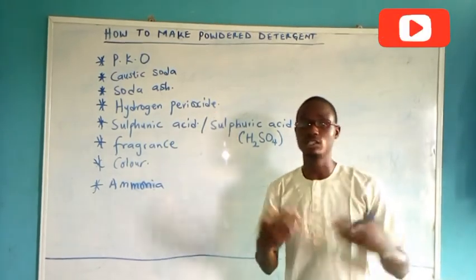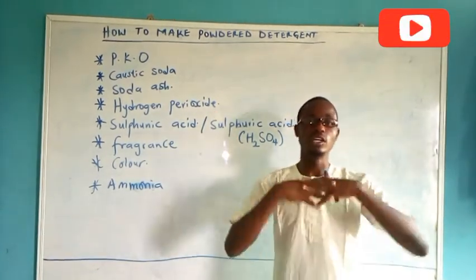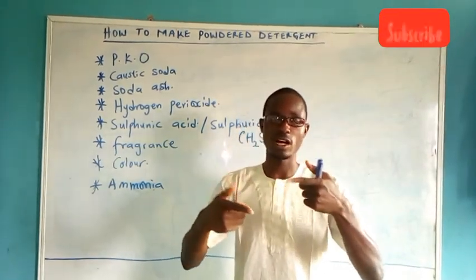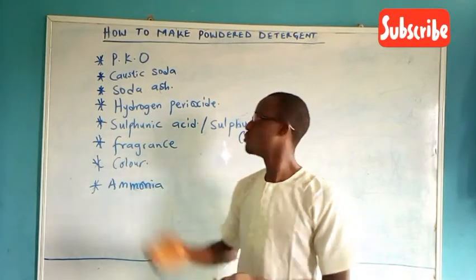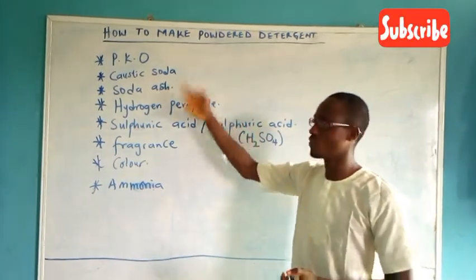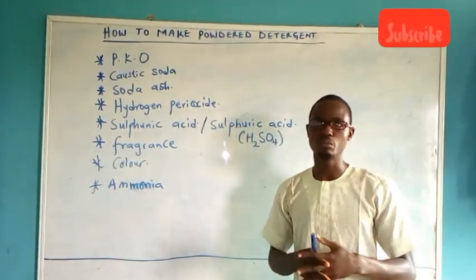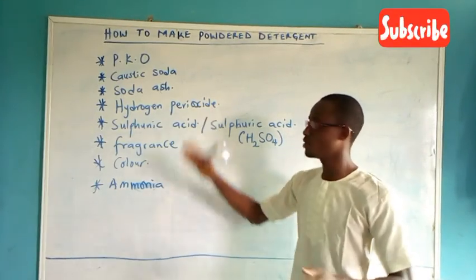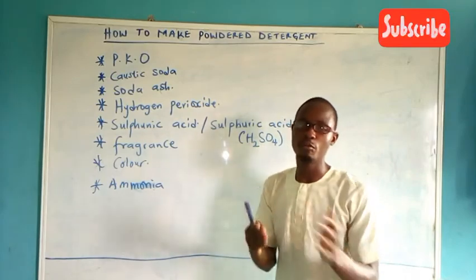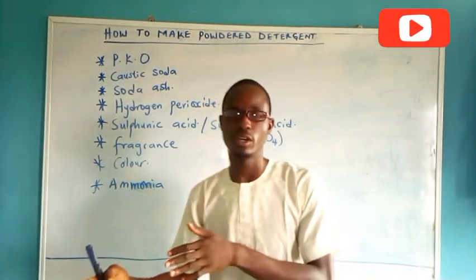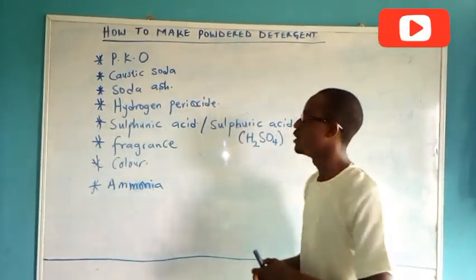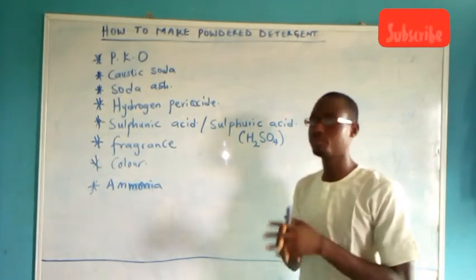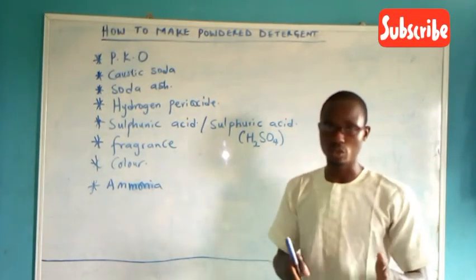Hydrogen peroxide is a catalyst in the reaction. It enables the reaction to form powder quickly, because most of these materials are also used in production of solid soap. So the ratios and use of hydrogen peroxide make it quickly form powder. Then soda ash is also a washing soda — it is also a foaming agent.